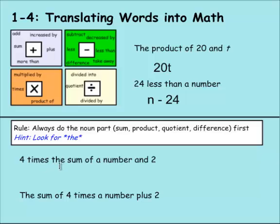We have 4 times the sum of a number and 2. We see the sum of a number and 2, so let's do that first. N plus 2, and we're going to put that in parentheses. Now we need to do 4 times that. So we're going to multiply 4 times the sum of N plus 2. You can write 4 outside the parentheses like that.